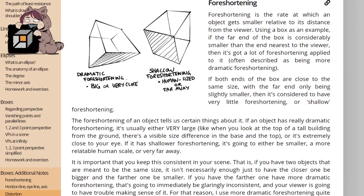Foreshortening is the rate at which an object gets smaller relative to its distance from the viewer. Using a box as an example, if the far end of the box is considerably smaller than the end nearest to the viewer, then it's got a lot of foreshortening applied to it, often described as being more dramatic foreshortening. If both ends of the box are close to the same size, with the far end only being slightly smaller, then it's considered to have very little foreshortening or shallow.